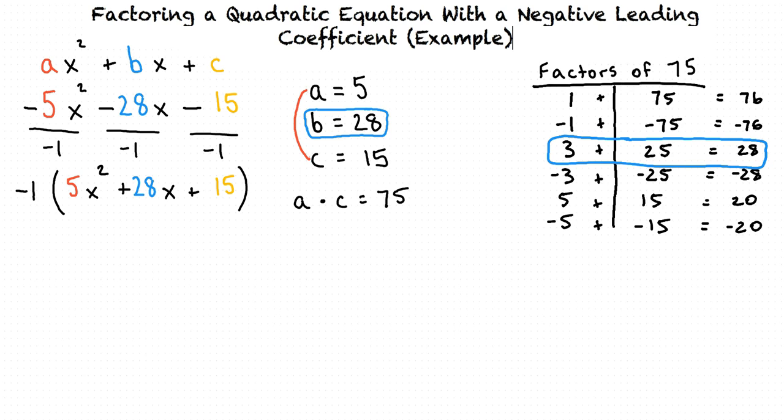Our new equation can be written as negative 1 times 5x squared plus 3x plus 25x plus 15. We can rewrite our equation this way because as we found over here, 3x plus 25x equals 28x.